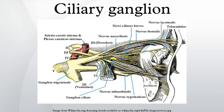The ciliary ganglion is a parasympathetic ganglion located just behind the eye in the posterior orbit. It measures 1 to 2 mm in diameter and in humans contains approximately 2,500 neurons. The ocular motor nerve coming into the ganglion contains preganglionic axons from the Edinger-Westphal nucleus, which forms synapses with the ciliary neurons.